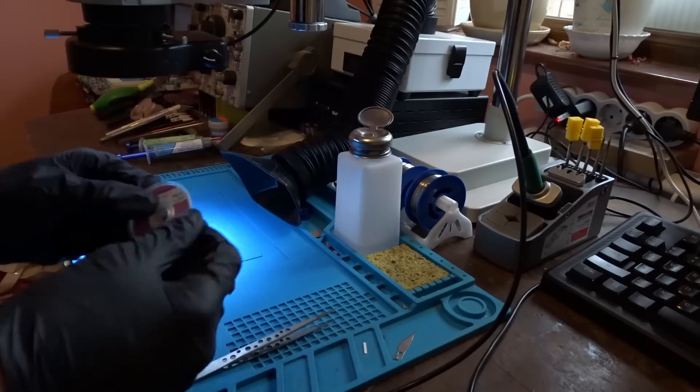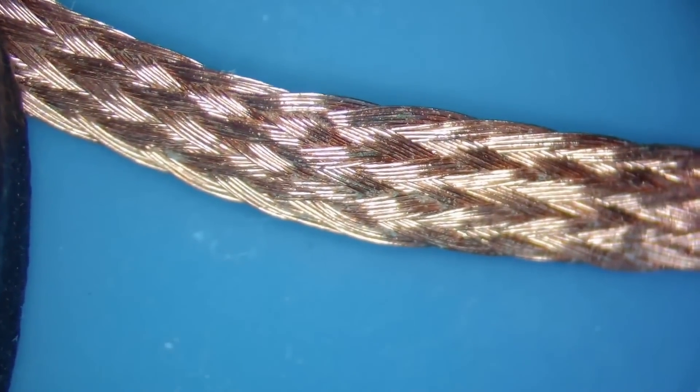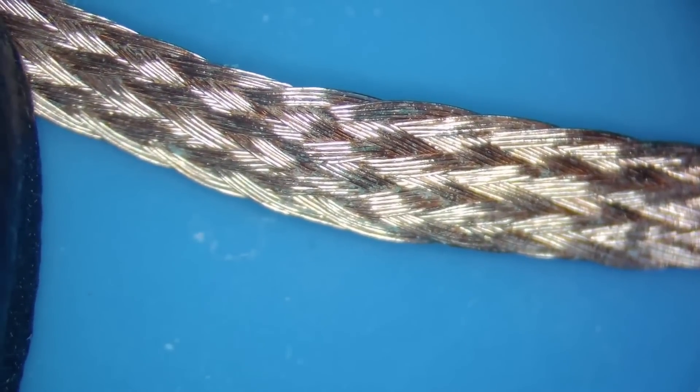Last for now and definitely not least, we got a solder wick, which essentially is a copper braid with some flux already in it that when heated can be used to suck out the tin from the solder joint.